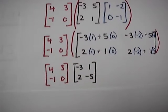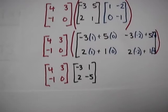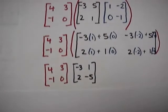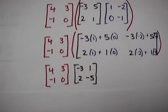Negative 3 times 1 plus 5 times 0 is negative 3, 2 times 1 plus 1 times 0 is 2.